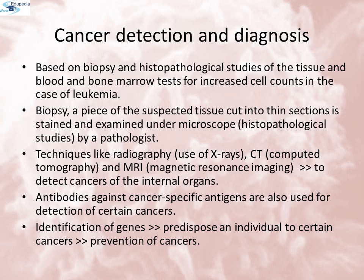Antibodies against cancer-specific antigens are also used for detection of cancers. Techniques of molecular biology can be applied to detect genes in individuals with inherited susceptibility to certain cancers. Identification of such genes which predispose an individual to certain cancers may be very helpful in prevention. Such individuals may be advised to avoid exposure to particular carcinogens to which they are susceptible, for example, tobacco smoke in the case of lung cancer.